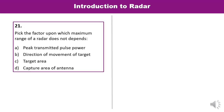Question 21: Pick the factor upon which the maximum range of radar does not depend. Options: peak transmitted pulse power, direction of movement, target area, or capture area. Radar range depends on peak power, target area, and capture area. So B — direction of movement — is the factor upon which radar range does not depend. That is the correct answer.